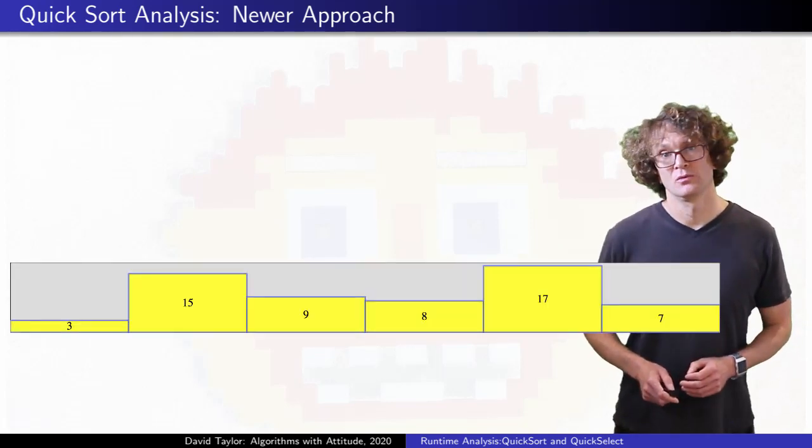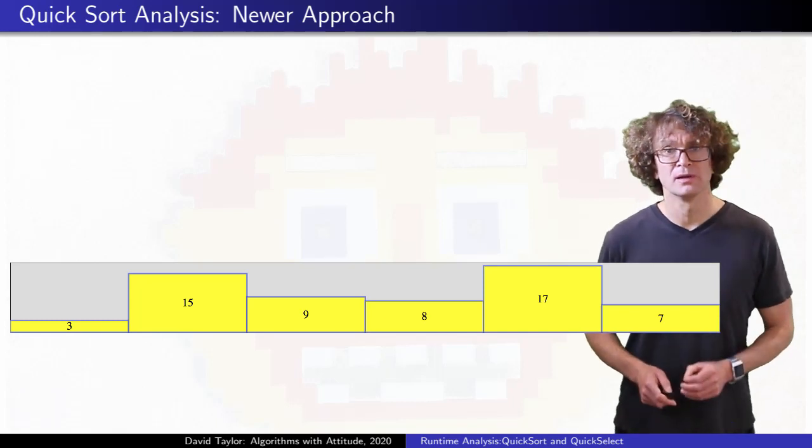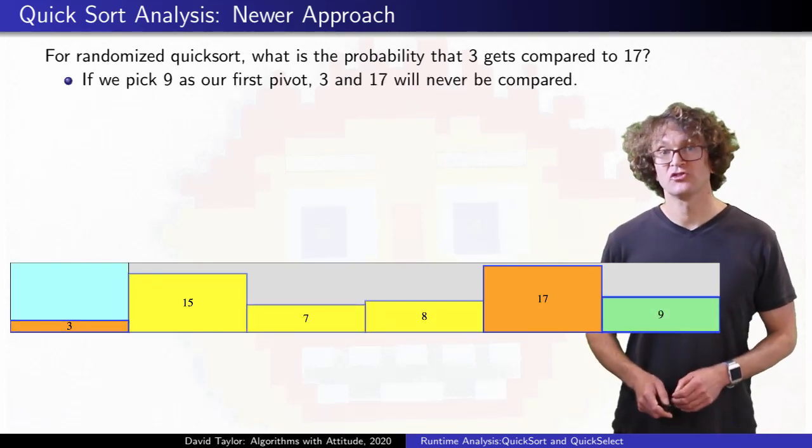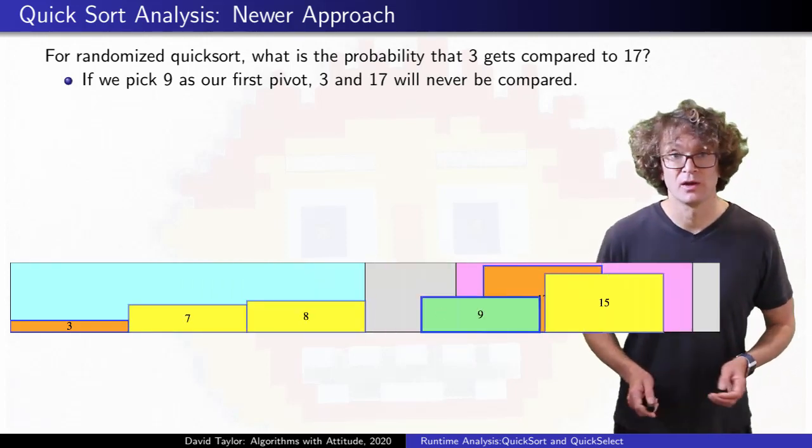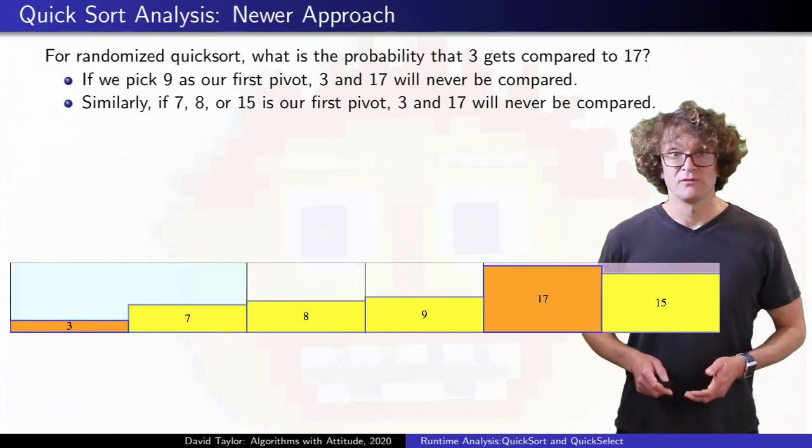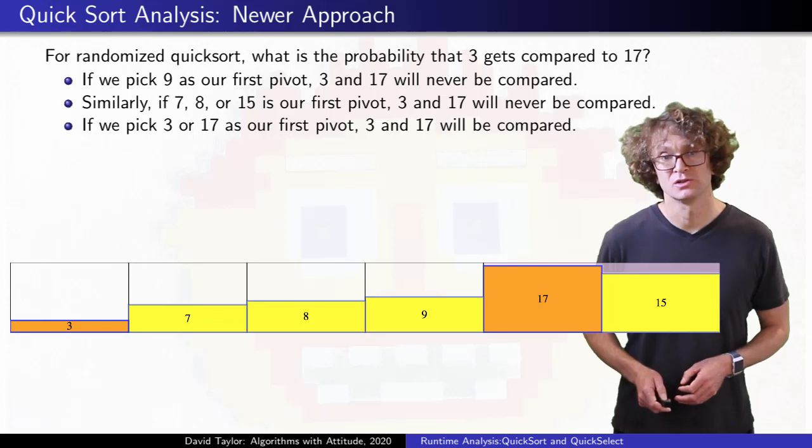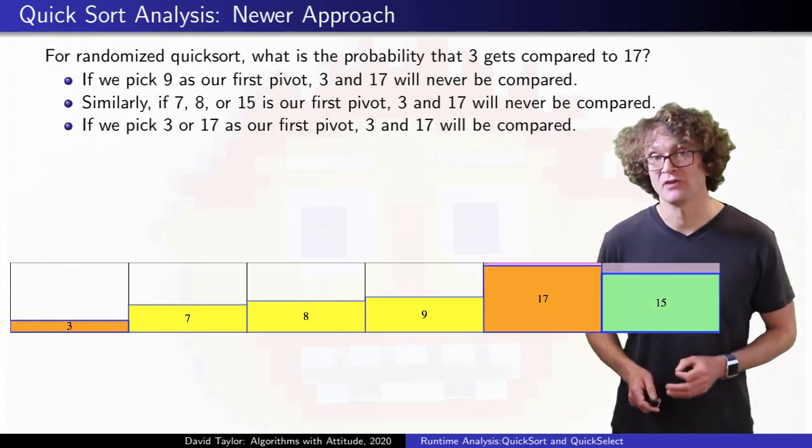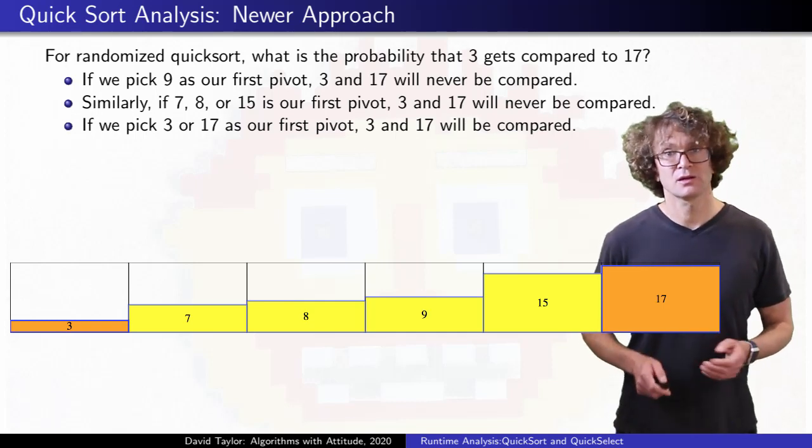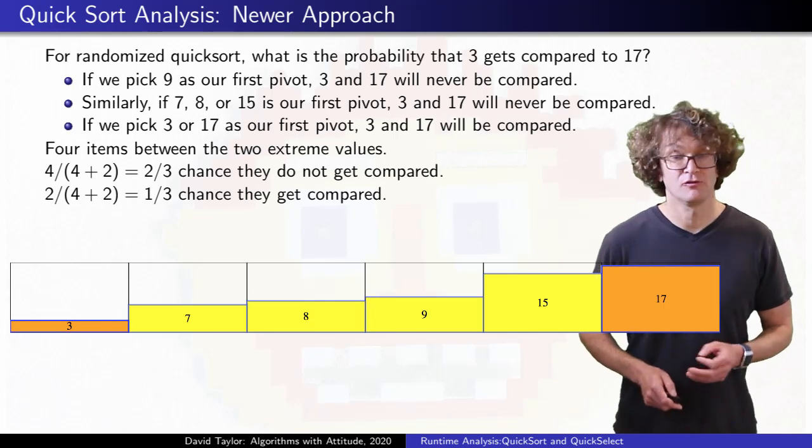So here is a really small array, and instead of asking how long it takes to run, I'm going to ask a much more limited question. If we run randomized quicksort, what's the probability that 3 will get compared to 17? If we happen to pick 9 as our first pivot, it will separate 3 and 17 into different partitions, and then during the entire rest of the sort, they won't get compared. Similarly, if I had chosen 7, 8, or 15, 3 and 17 also won't ever get compared. Only if we choose 3 or 17 as our first pivot will they get compared to each other. Because 3 and 17 are the minimum and maximum items, we will know after picking just one pivot if those values get compared. If one of them is chosen first, they get compared, or if one of the four values between them gets chosen first, they don't. There is a one third chance that they get compared, because there are four values between them.